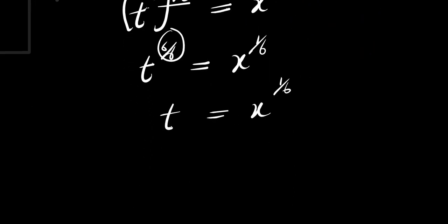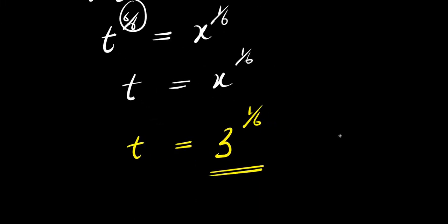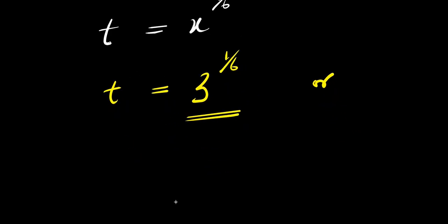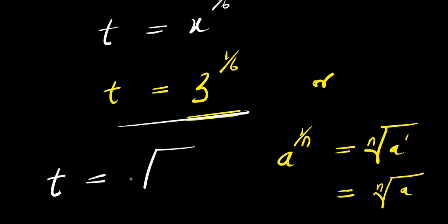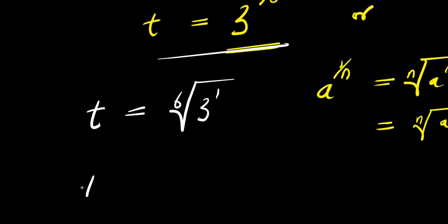We can leave our answer as t equals 3 to the power of 1 over 6, or simplify further using the identity a to the power of 1 over n equals the nth root of a. So t equals the 6th root of 3.